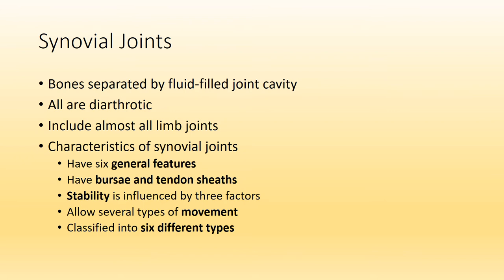We'll spend the next couple of minutes looking at the general features that synovial joints share with each other. Synovial joints will have bursa or tendon sheaths. We'll talk about stability and how it's affected across these joints. We will get into movements that are allowed at synovial joints as well as the six different types of synovial joints.